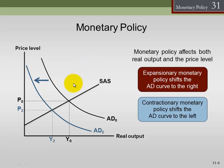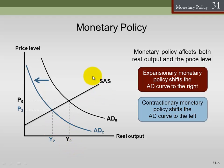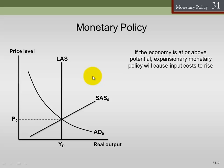Contractionary policy works the opposite. Say the economy is running a little too hot and we're worried about where the price level is. We can increase the interest rate by reducing the amount of money in circulation, which causes lower consumption and lower investment, shifting aggregate demand to the left — a reduction in aggregate demand, lowering the price level. Adding in long-run aggregate supply, we can see how to use monetary policy to smooth out business cycles.